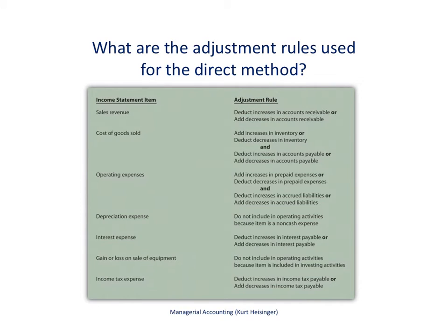What you see here are the adjustment rules that we need to use when we are using the direct method. We have to go to every revenue account and every expense account and adjust those accounts from an accrual basis to a cash basis. Remember, all the accounts that you see in the income statement are revenue accounts or expense accounts. So we need to adjust each one to get from an accrual basis to a cash basis.